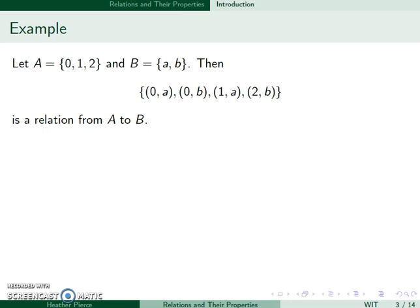So let's let A equal 0, 1, 2, and B be equal to A, B. Then we have this relation: 0A, 0B, 1A, and 2B is a relation.